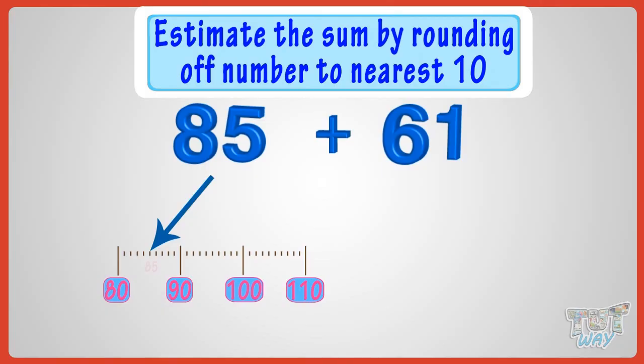Rounding off 85 to the nearest 10, we get 90, as 85 is on the 5 mark. Rounding off 61 to the nearest 10, we will get 60, as 61 is below the 5 mark.